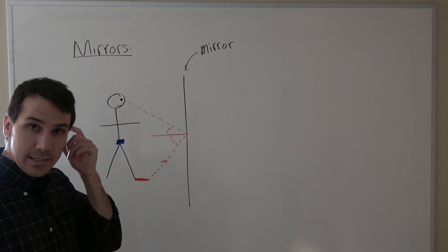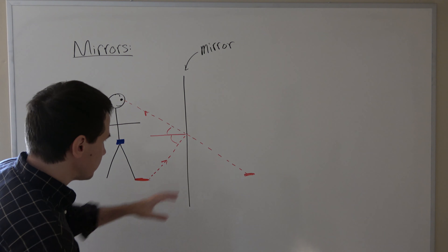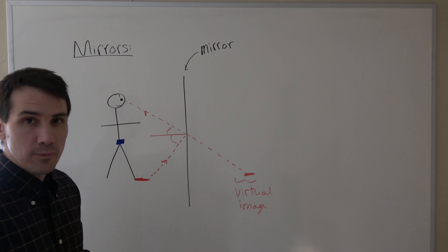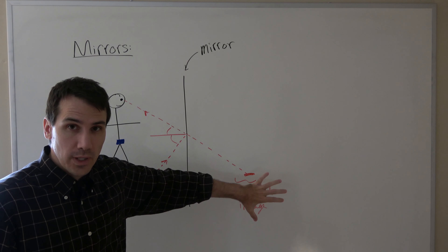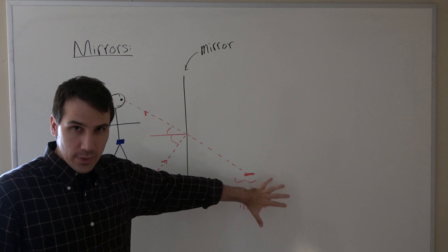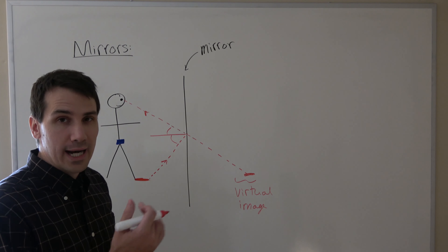Now let's think about what your eye actually sees. One thing to know about how humans work is that we always assume that light traveled in a straight line. So when you see light entering your eye from this angle, you assume it actually came from a straight line continuing in that direction, which means your eye believes there is a red shoe over here on the other side of the mirror. This is called a virtual image — virtual means no light is actually over there, there is no actual red shoe on the right side of the mirror, but your eye believes the red shoe is there because that is the straight-line path your eye perceives.